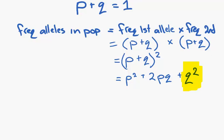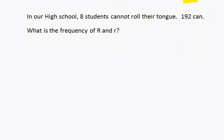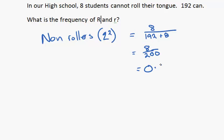Let's invent a population then. The key to solving this problem is Q squared, working out the proportion of individuals that are homozygous recessive. So to do that, our non-rollers, which is Q squared, because they are small r small r, are 8 out of the total, which is 192 plus 8. Which is 8 divided by 200 equals 0.04.